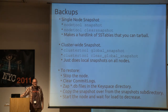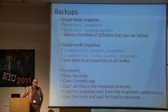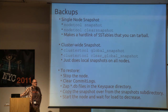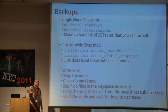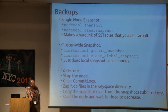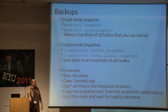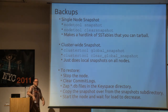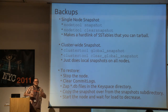Backups: we actually don't do any, because we only need three days of data and can recalculate recommendations. But I've tested and played with them. You can just do nodetool snapshot and then nodetool clearsnapshot to clear it — all it does is make a hard link in a subdirectory underneath the column family. You can do a cluster-wide snapshot with clustertool. To restore: stop the node, clear the commit logs, set the database files in the key space directory, copy the snapshot over, bring it up. It takes a while for the file system cache to build back up and for performance to get really good again.